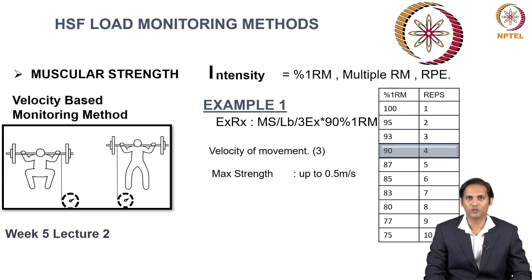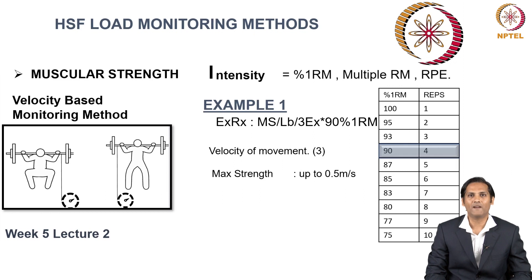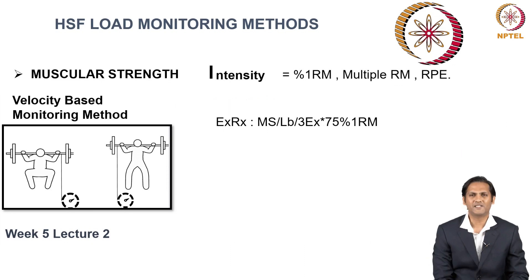Irrespective of your current muscular strength, every time you move, the speed of movement should be up to 0.5 meters per second. If there is an increase in muscular strength, that is reflected by simply having a greater lifting ability rather than a greater speed of movement. Your speed of movement remains constant; however, the weight you are lifting keeps increasing, which represents increased muscular strength ability. This is one example of how you can use the velocity-based monitoring method to control and monitor load to increase muscular strength.